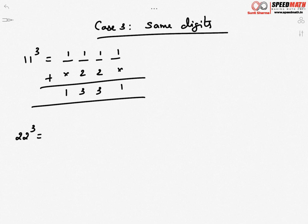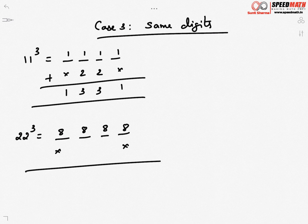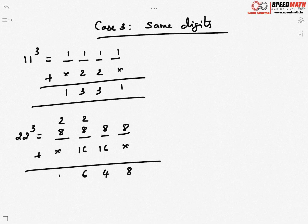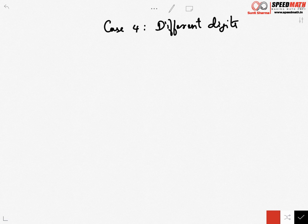Another example: 22³. Both digits are the same, so cube 2 and write it four times — 2³ = 8, so write 8, 8, 8, 8. Step 2: leave first and last, double the middle — 8 doubled is 16. Step 3: add everything — 8 stays; 8 + 16 = 24 (write 4, carry 2); 8 + 16 + 2 = 26 (write 6, carry 2); 8 + 2 = 10. So 22³ = 10648.